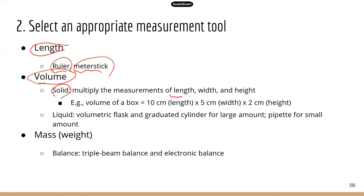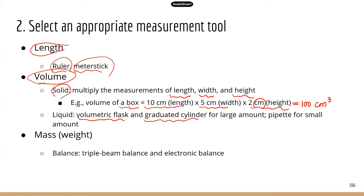For solid volume, you need to measure the length, width, and height of the object, then multiply all three numbers together to get the volume. For example, 10 times 5 times 2 equals 100, and if the unit for length is centimeters, the volume will be 100 cubic centimeters. For liquid, we use a volumetric flask or graduated cylinder for larger amounts — some can go up to 1,000 milliliters, which is one liter.